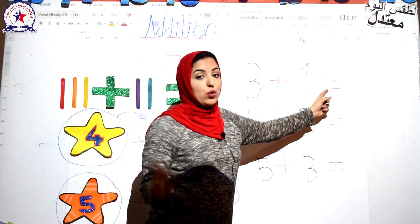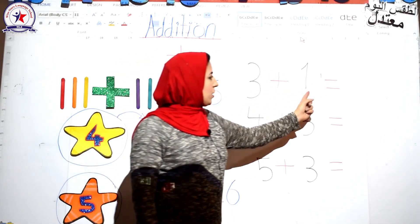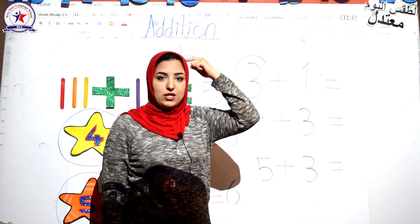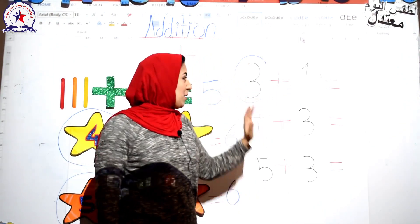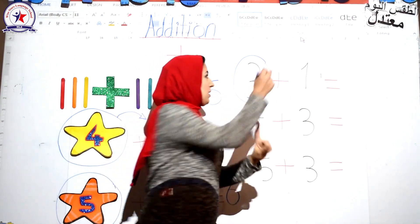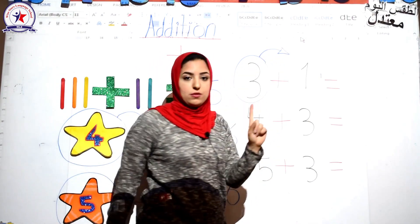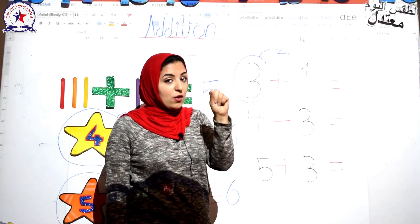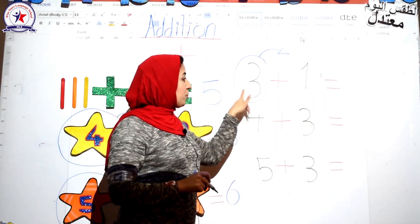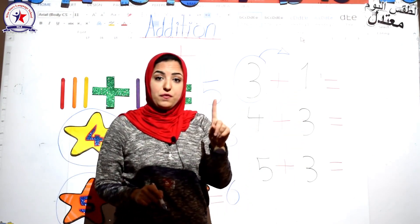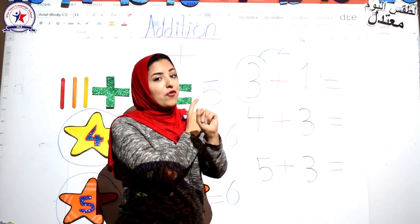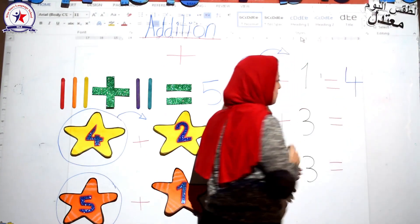Three plus one equal what? Circle the bigger number. Put the bigger in your head and put the smaller on your finger. Count after the bigger — after three: four. Three plus one equals four. Let's try four.